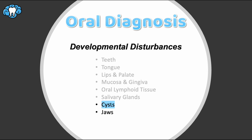Cysts, by definition, are sacs usually filled with fluid, but sometimes another material, and the cavity of that cyst is always lined with epithelium. For reference, I would also include the oral lymphoepithelial cyst and the branchial cleft cyst in this category, but we reviewed them already when we talked about oral lymphoid tissue.